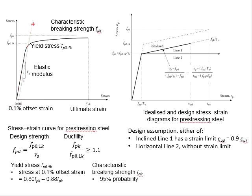The intersection of the offset line with the curve here is defined as the yield stress, Fp0.1k.